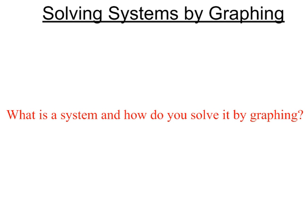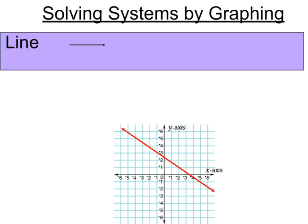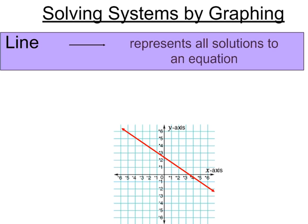Solving systems by graphing. What is a system and how do you solve it by graphing? Well, first we have to remember a couple of things. Let's remember what we know about a line — that a line represents all the solutions to an equation. All the ordered pairs that we could find that will solve that particular equation will be found on the line.